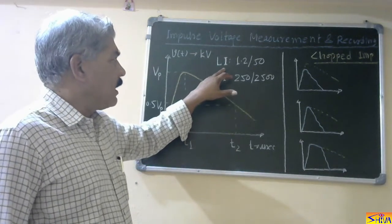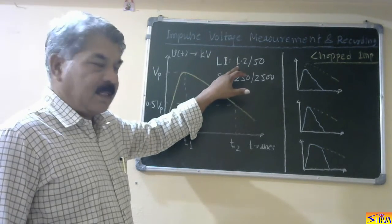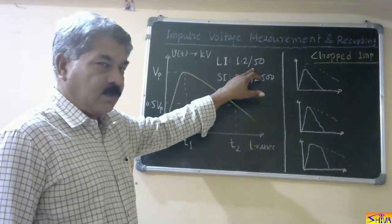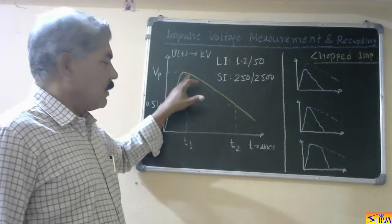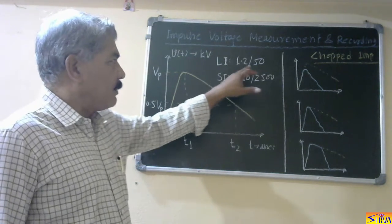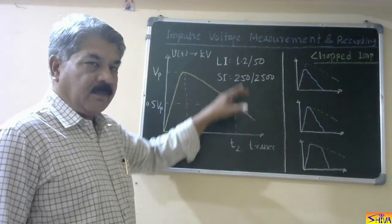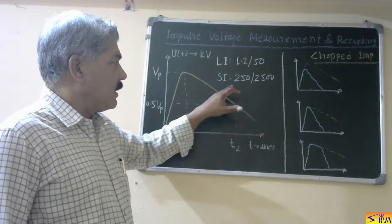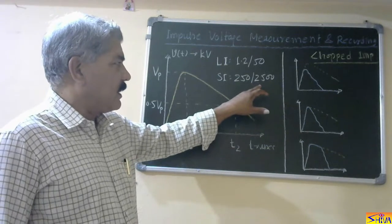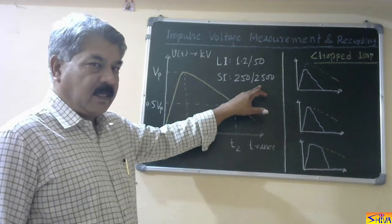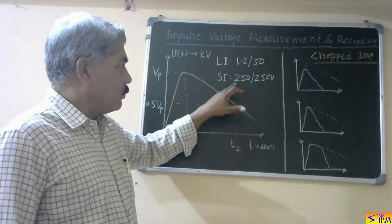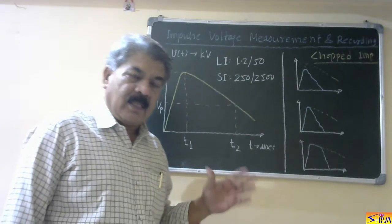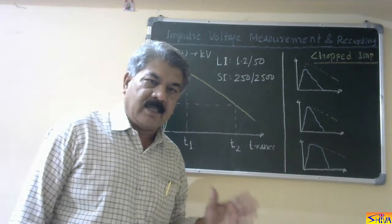For lightning impulse, the standard as per image standard is 1.2 by 50 microseconds — 1.2 microseconds should be rise time and 50 microseconds is decay time. If it is switching impulse, then rise time is 250 microseconds and tail time is 2500 microseconds, so it is a 250 by 2500 microseconds wave. Therefore, recording is necessary.